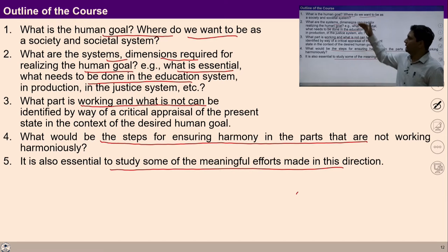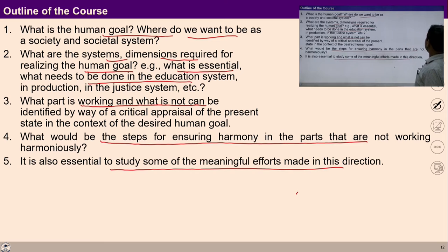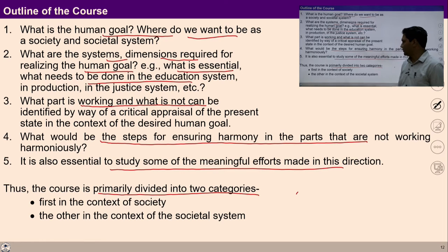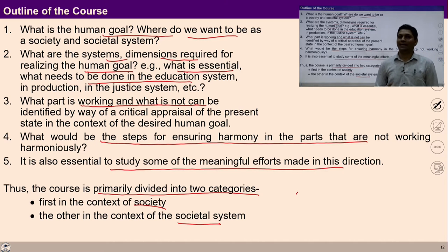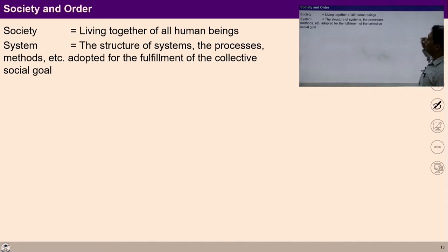Basically, the whole course is based on these five key concepts, detailing these five key points. The course is primarily divided into two categories: first, in the context of society, and the other in the context of social systems. The first part discusses ways to reach where we want to be as a society; the second part discusses steps in the context of societal system and societal order.